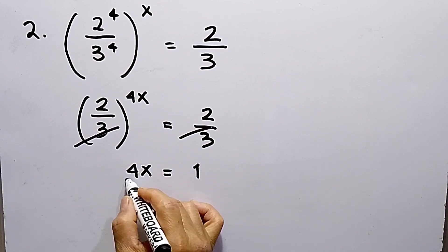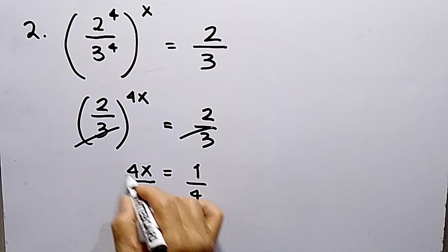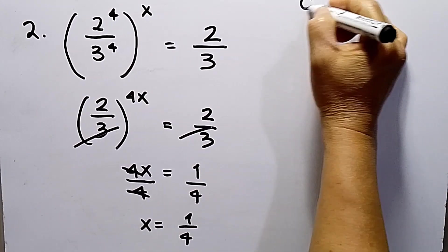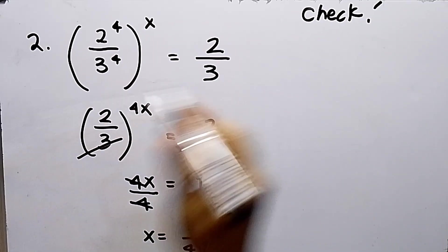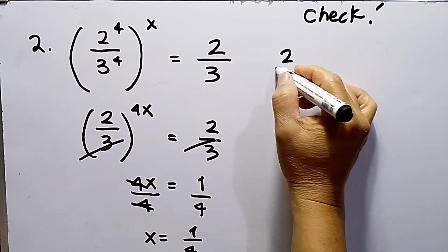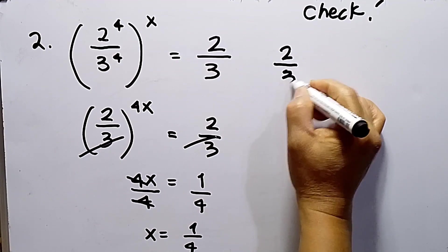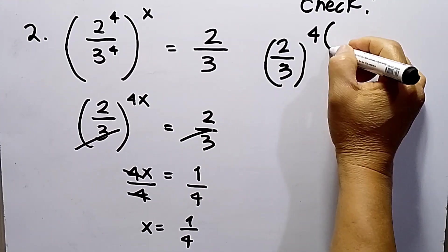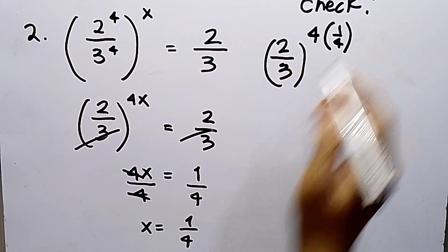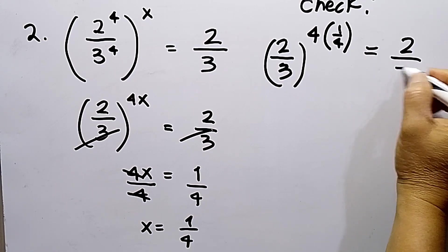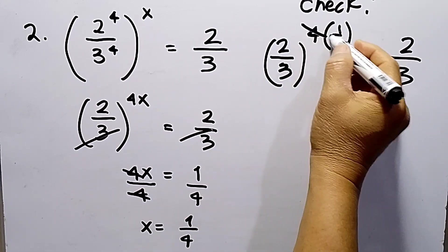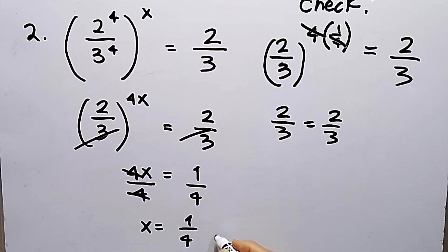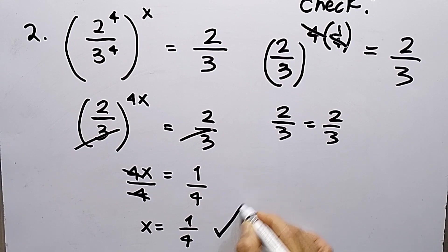To solve the value of x, I need to divide both sides by 4. So x equals 1/4. Let us check: substitute into the equation — (2/3) raised to the 4th power, then 4 times 1/4 equals 2/3. The 4s cross out, giving 2/3 equals 2/3. Therefore, x equals 1/4 is correct.